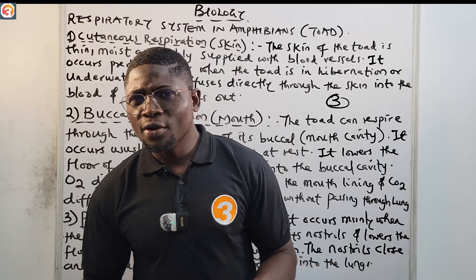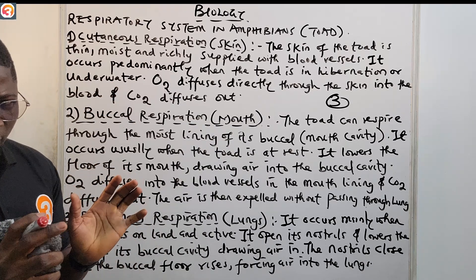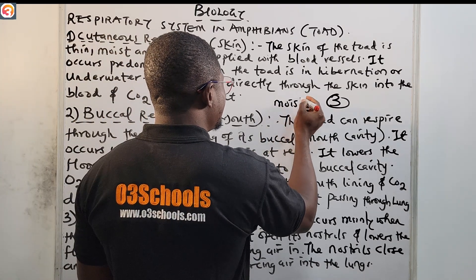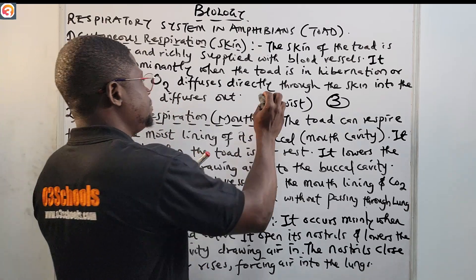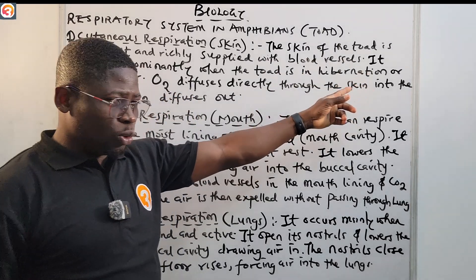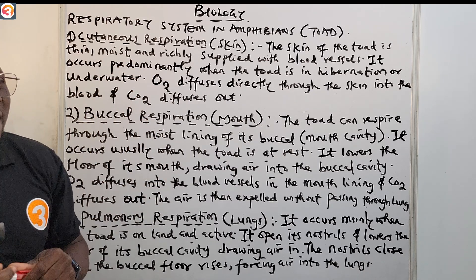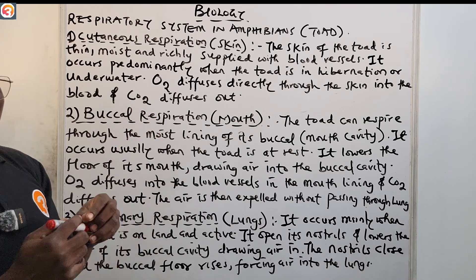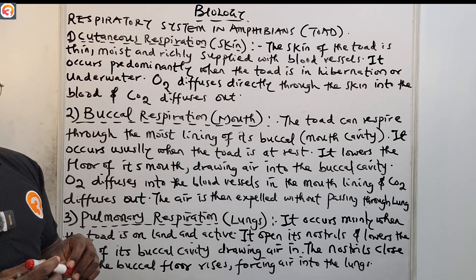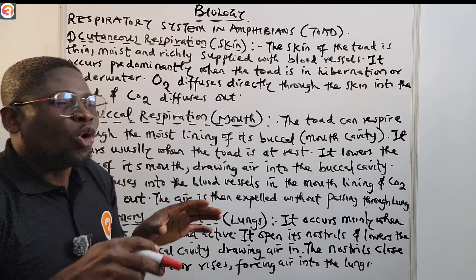Take note of all three methods, as examiners often set questions on this. For continuous respiration, the toad uses its moist skin. The skin of the toad is thin, moist, and richly supplied with blood vessels. This type of respiration occurs predominantly when the toad is in hibernation or when it is underwater.